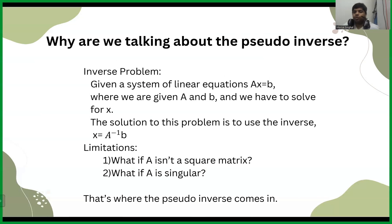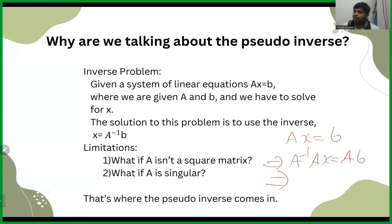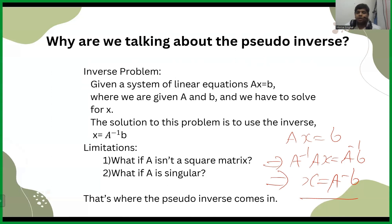Before talking about the pseudo-inverse, let's talk about why we need it. This dates back to the inverse problem: given a system of linear equations Ax = b, where we are given A and b and must solve for x. The normal approach is to multiply the inverse from the left on both sides, giving us x = A⁻¹b. Limitations: first, what if A is not a square matrix? Second, what if A is singular?